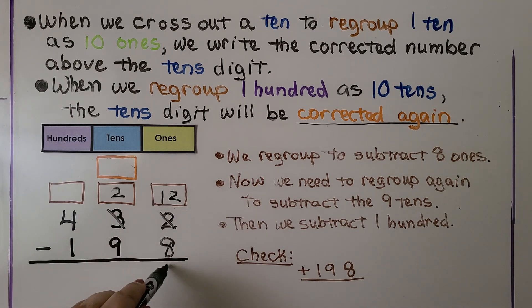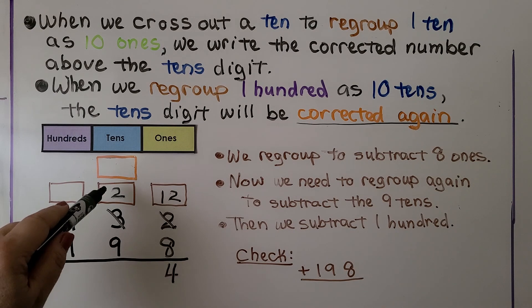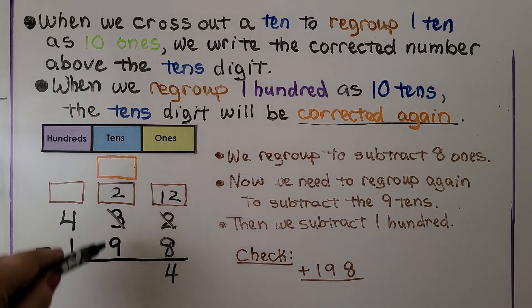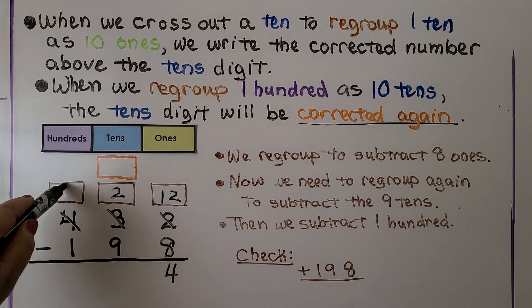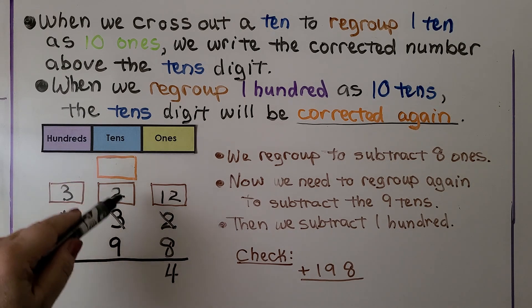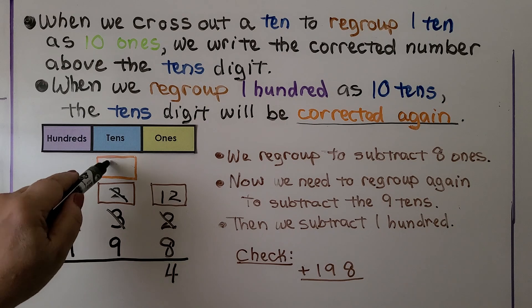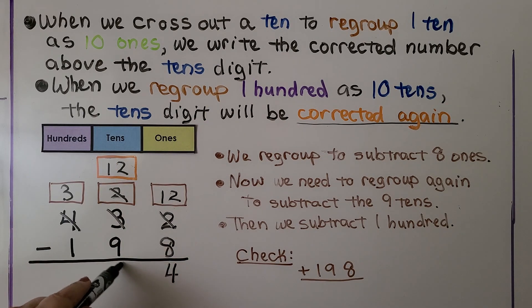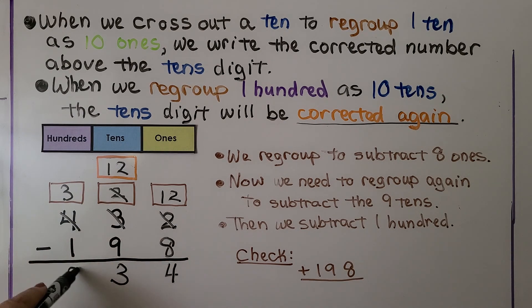Twelve minus eight is equal to four. Now we have two tens and we need to take nine away. We don't have enough, so we are going to cross off this four hundred and make it a three hundred. We give it to the tens place as ten tens. So now instead of two tens, we have twelve tens. Twelve tens minus nine tens is three tens, and three hundreds minus one hundred is two hundred. The answer is two hundred thirty-four.